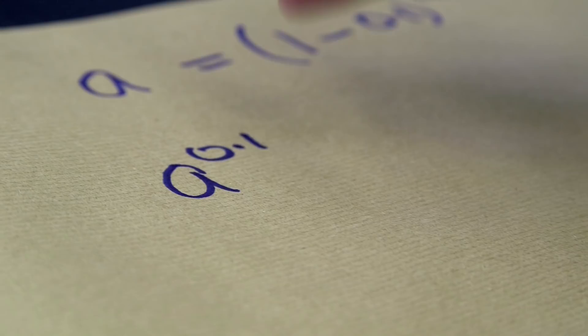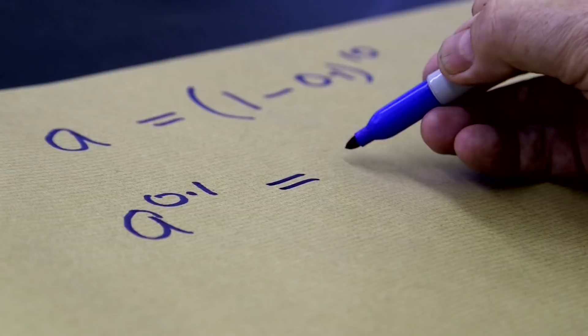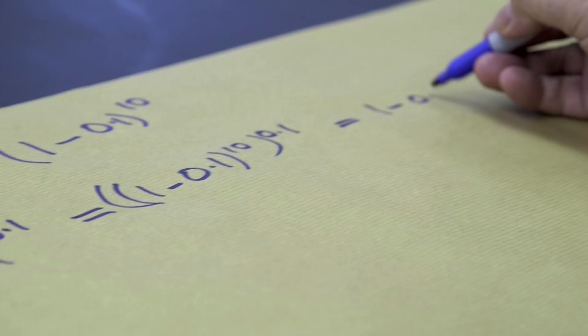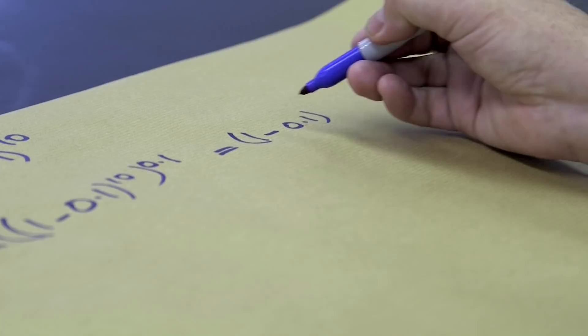And this is 1 minus 0.1 to the 10 to the power of 0.1, which is 1 minus 0.1. 10 times 0.1 is 1. So this is 0.9.